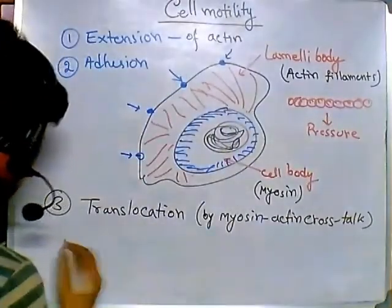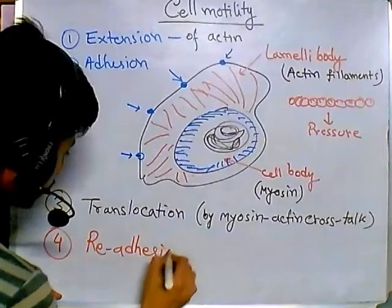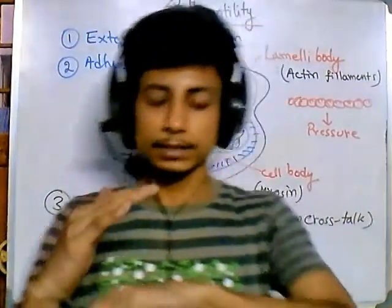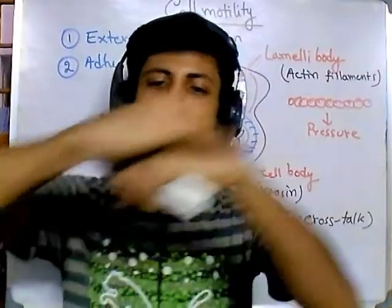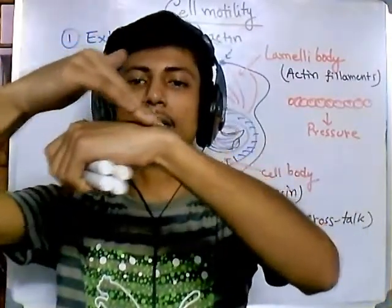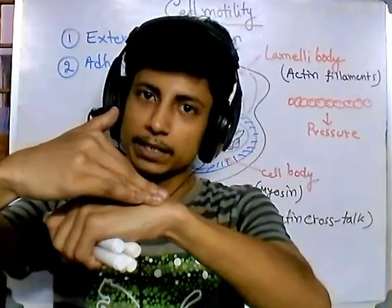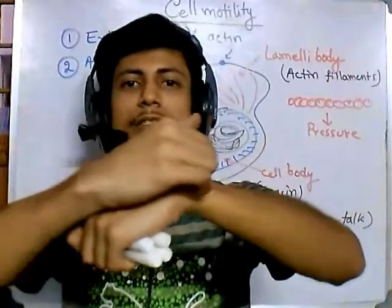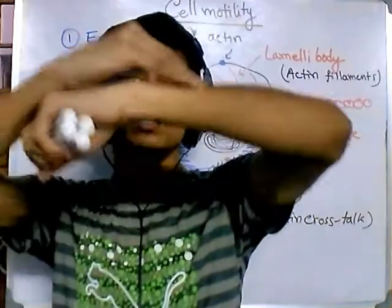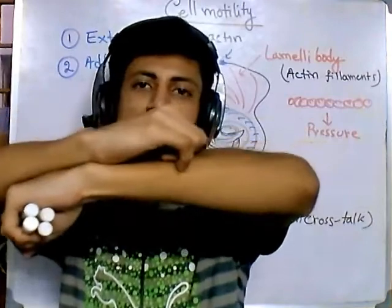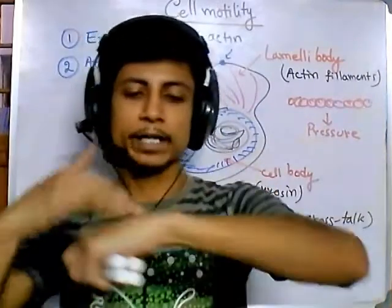Once translocation is complete, the final stage occurs: re-adhesion. The cell now has two contact points — one at the new position and one at the previous location. It releases the previous contact point, and because of the stretch, it snaps into the new position — like an elastic rubber band pulled forward. Then the cycle repeats: extension, adhesion, translocation, release. Extension, adhesion, translocation, release. This is how the cell moves using actin filaments and myosin.